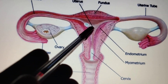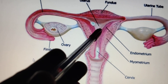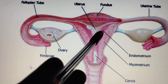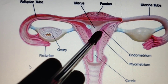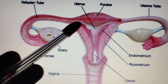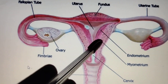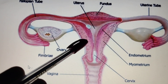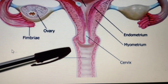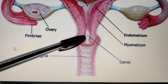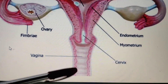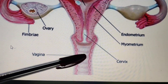This is the site of implantation. The endometrium is where placenta formation takes place, and these myometrium muscles help in parturition. This is the vagina — the cervix opens into the vagina, and the walls of the vagina are highly folded.